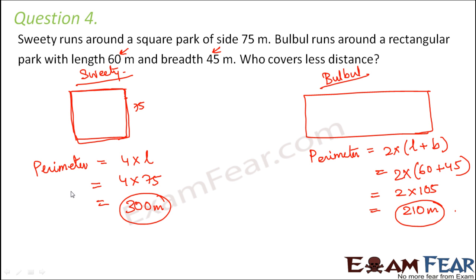So that means the total distance that Sweety covered is 300 meters and the total distance that Bulbul covered is 210 meters. So who covered less distance? Of course Bulbul. So Bulbul covered less distance.